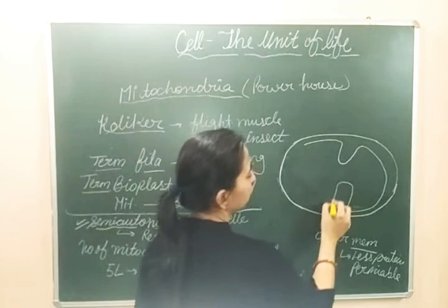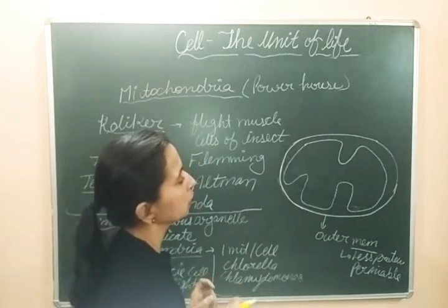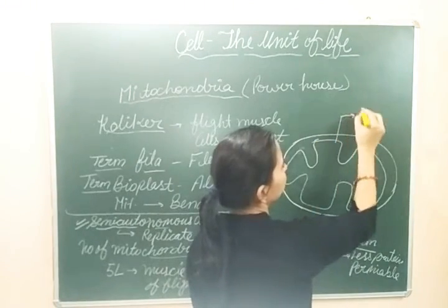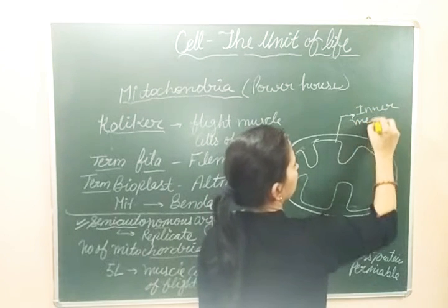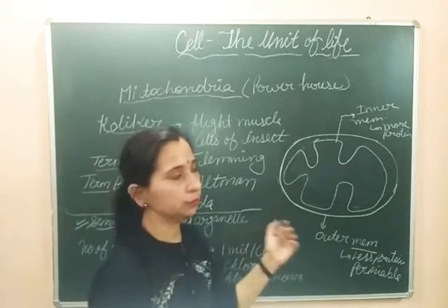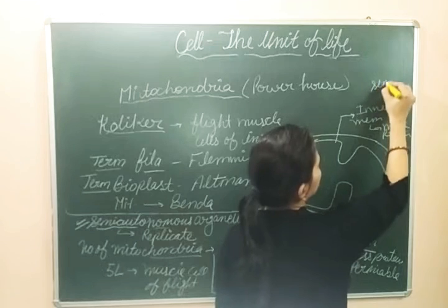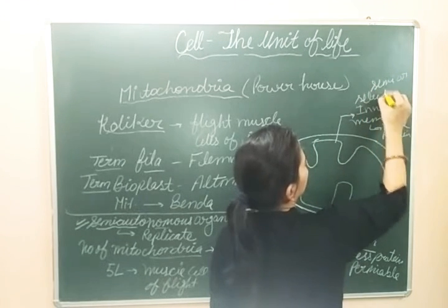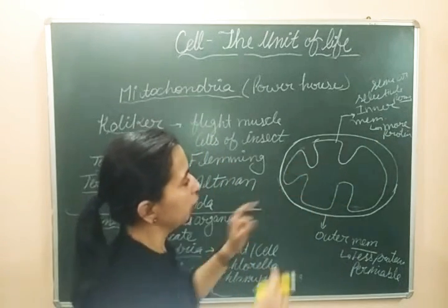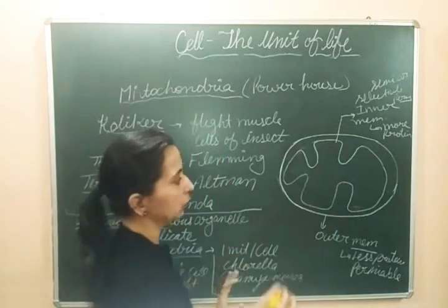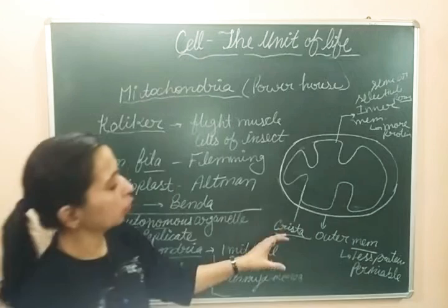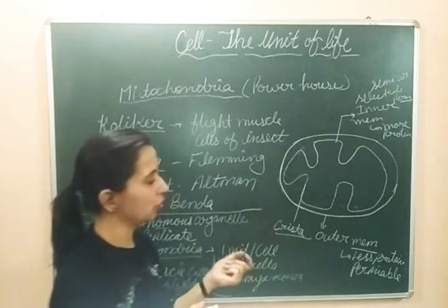The inner membrane makes infolds towards the inner side of the mitochondria. These infolds are known as cristae — the singular is crista, and collectively they are called cristae. Between the inner and outer membranes there is a space called the intermembrane space, creating two compartments: an outer compartment between the two membranes, and an inner compartment inside the inner membrane.